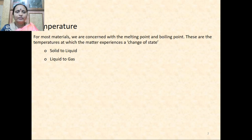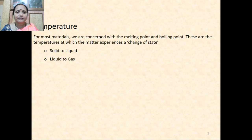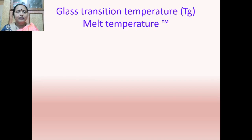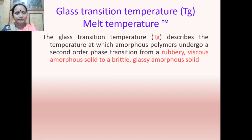We shall first deal with temperature for most materials. We are going to deal with temperature and boiling point, and with this temperature, matter experiences a change of state — from solid to liquid, liquid to gas. For thermoplastic materials we are concerned with glass transition temperature and melting temperature.